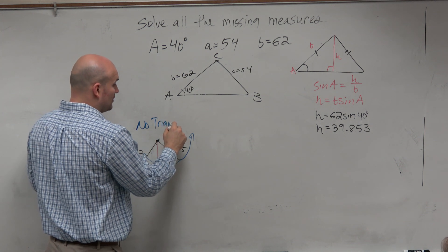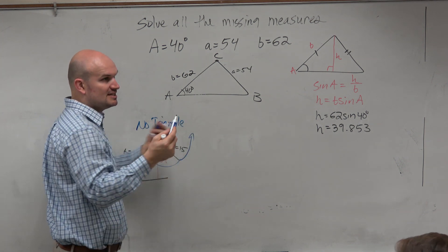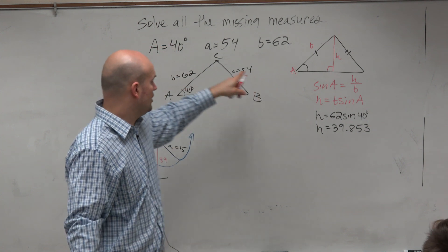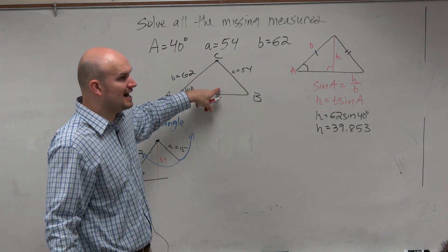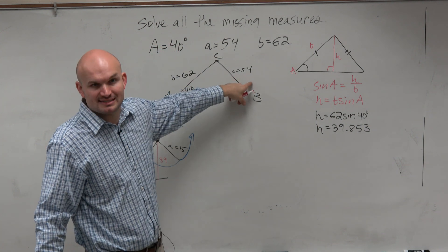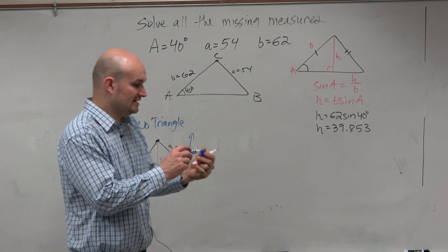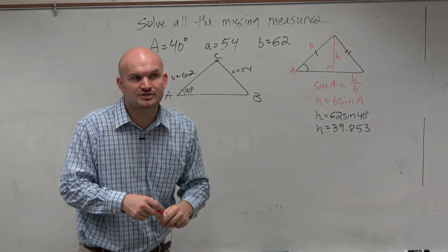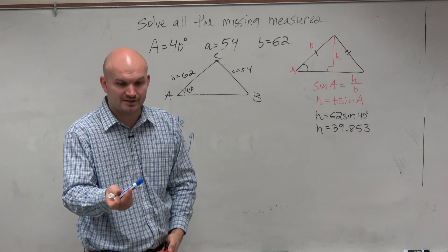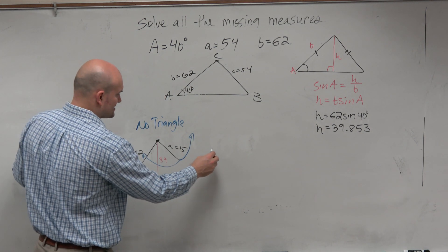The question I will ask you is, does this information produce a triangle? In our problem, we found the height to be 39. We see that that's smaller than that side, so we know there at least is a triangle. So we can continue moving on.